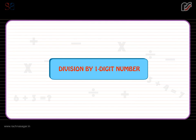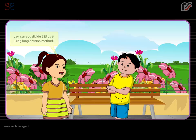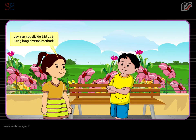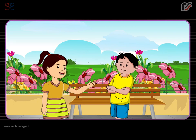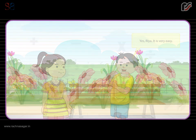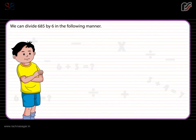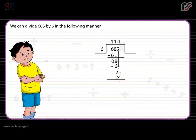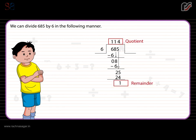Division by one digit number. Jay, can you divide 685 by 6 using the long division method? Yes, Rhea, it is very easy. We can divide 685 by 6 in the following manner. After performing division, we get the quotient as 114 and the remainder as 1.